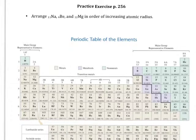This is a practice exercise from page 256 in the textbook. We're looking at taking atoms and arranging them in order of atomic radius. The first thing we want to do is find all of these atoms on the periodic table.